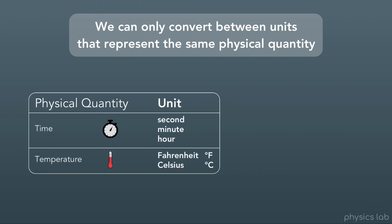The physical quantity of time has different units like seconds, minutes, or hours. So we can convert between units of time. For example, 60 seconds of time equals 1 minute of time.